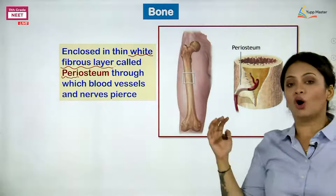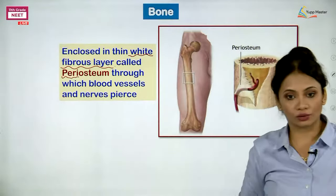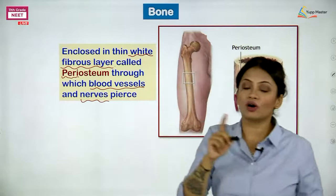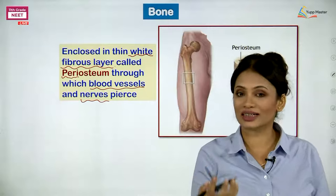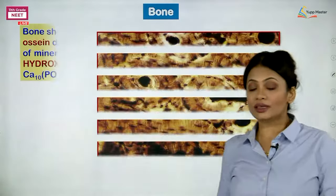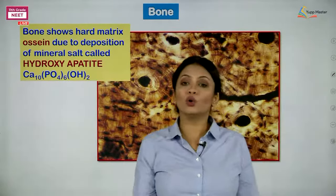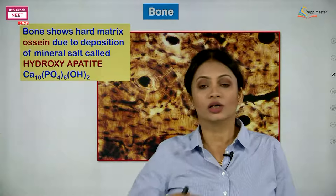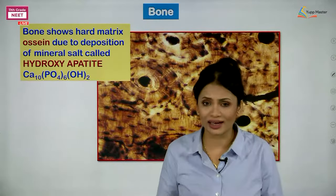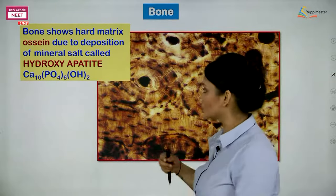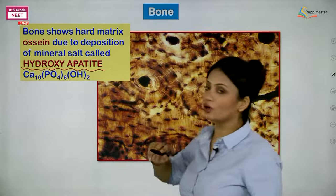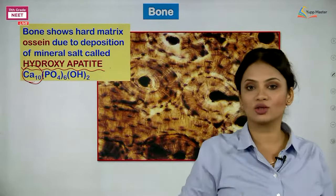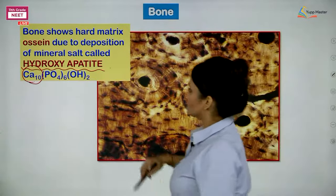Not only blood vessels but also nerves pass through the periosteum and enter the bone. Because nerves are present, you experience pain when you fracture your bones. Bone is made up of calcium, but the major mineral salt responsible for the hardness of bone is hydroxyapatite — which contains calcium, phosphate (PO₄), and OH groups.